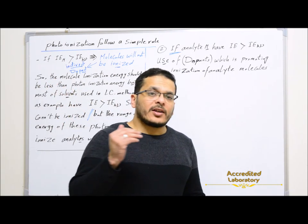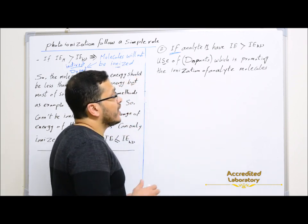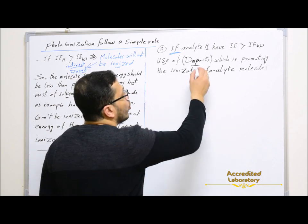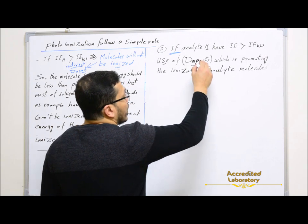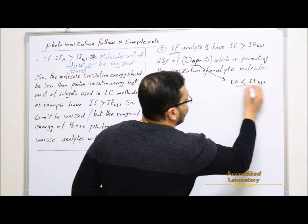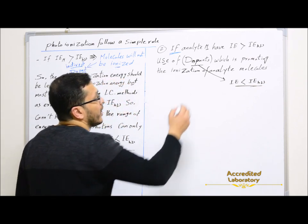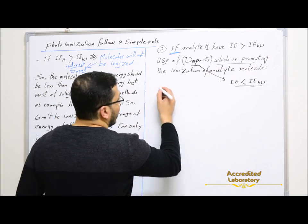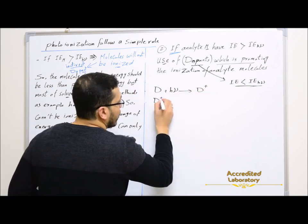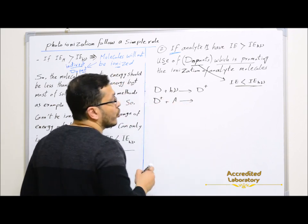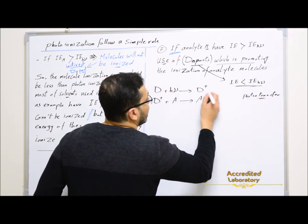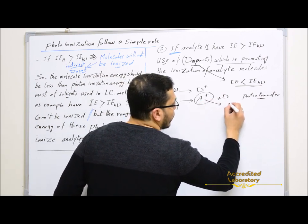If analyte molecules have ionization energy higher than the ionization energy of the photons, there will be no direct ionization. Instead, there will be indirect ionization using something called dopants. These are molecules added to the sample that have ionization energy lower than the ionization energy of photons, so they can be ionized easily by the photons, and that will promote the ionization of analyte molecules. The dopant will react with the photon and be ionized to form a dopant ion. Then this dopant ion will react with the analyte molecule and, by a proton transfer reaction, will form the analyte ion that will be transferred to the mass analyzer.